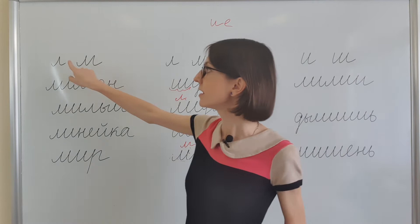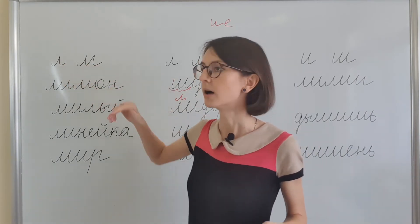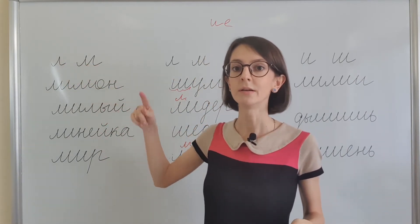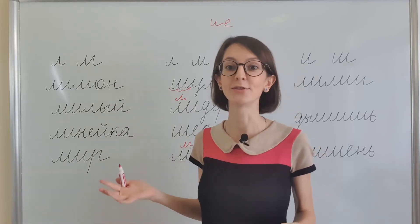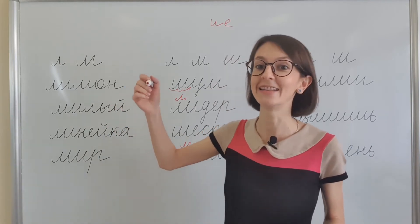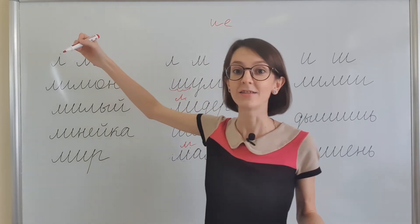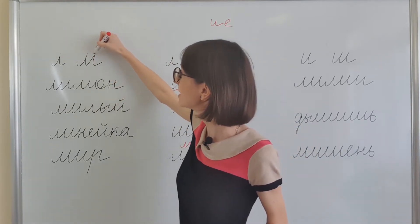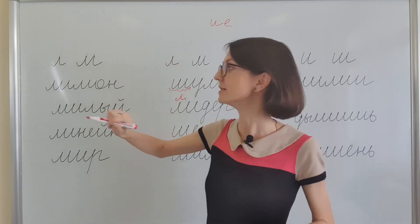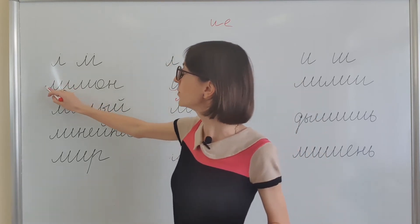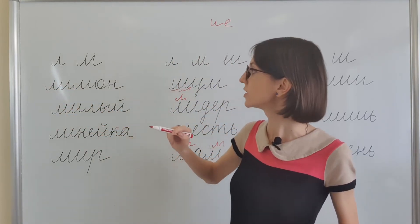Let's see how to read Л and М and how to see the difference between them. Л has obviously only one top and М has two tops — like mountains. And they both start from the top.